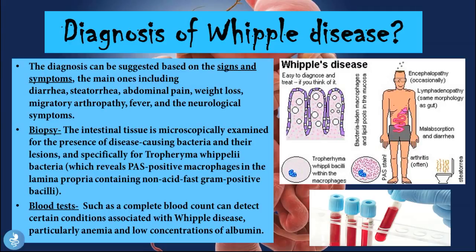Biopsy: the intestinal tissue is microscopically examined for the presence of disease-causing bacteria and their lesions, and specifically for Tropheryma whipplei, which reveals PAS-positive macrophages in the lamina propria containing non-acid-fast gram-positive bacilli. There is a specific stain called the PAS stain that can be done on the biopsy, and a PAS-positive result is suggestive and diagnostic for Whipple disease.